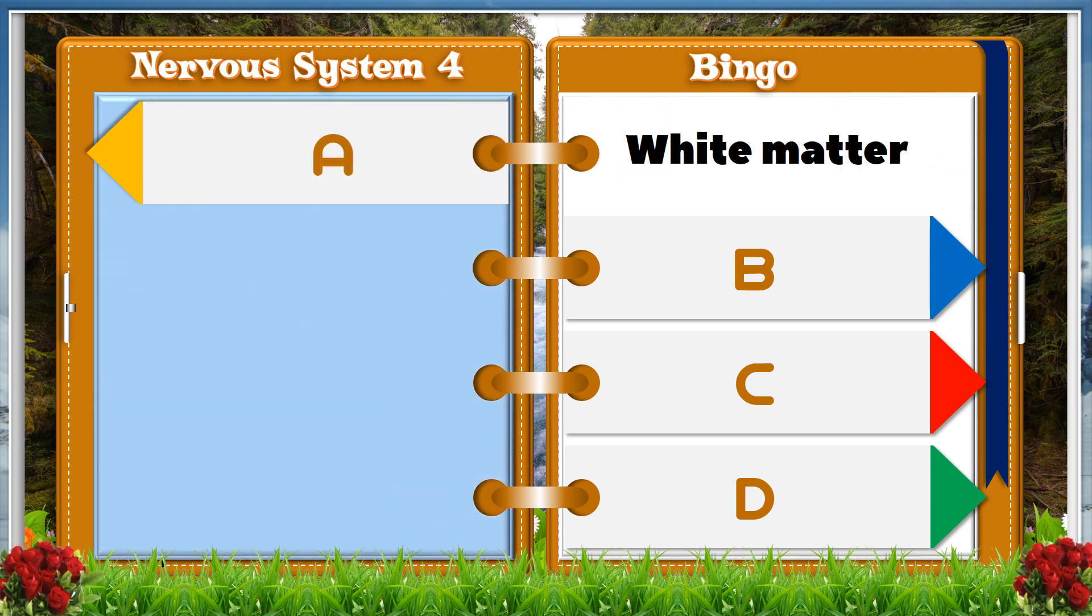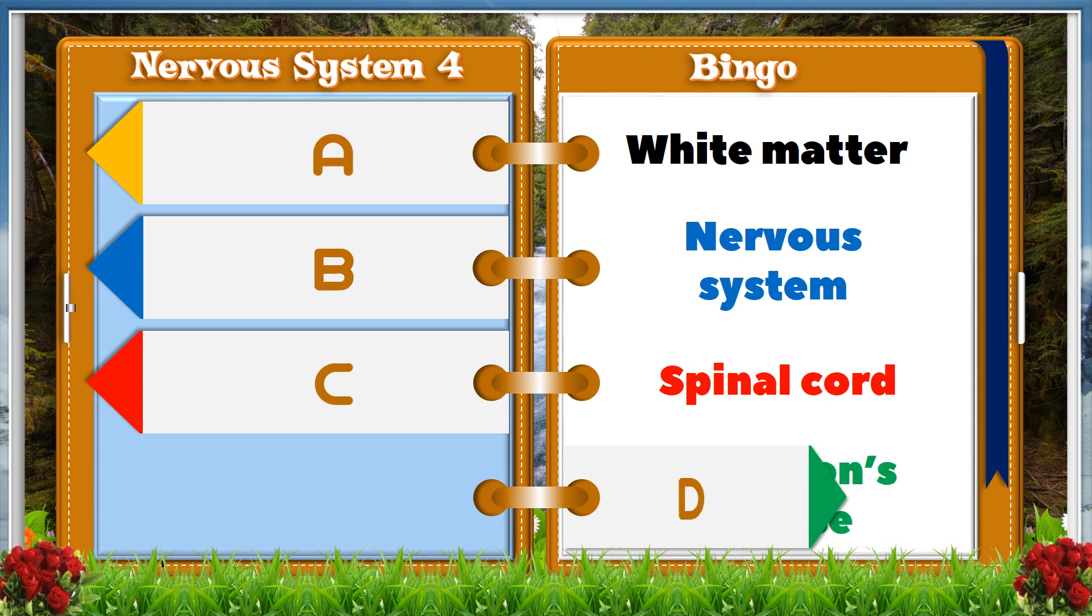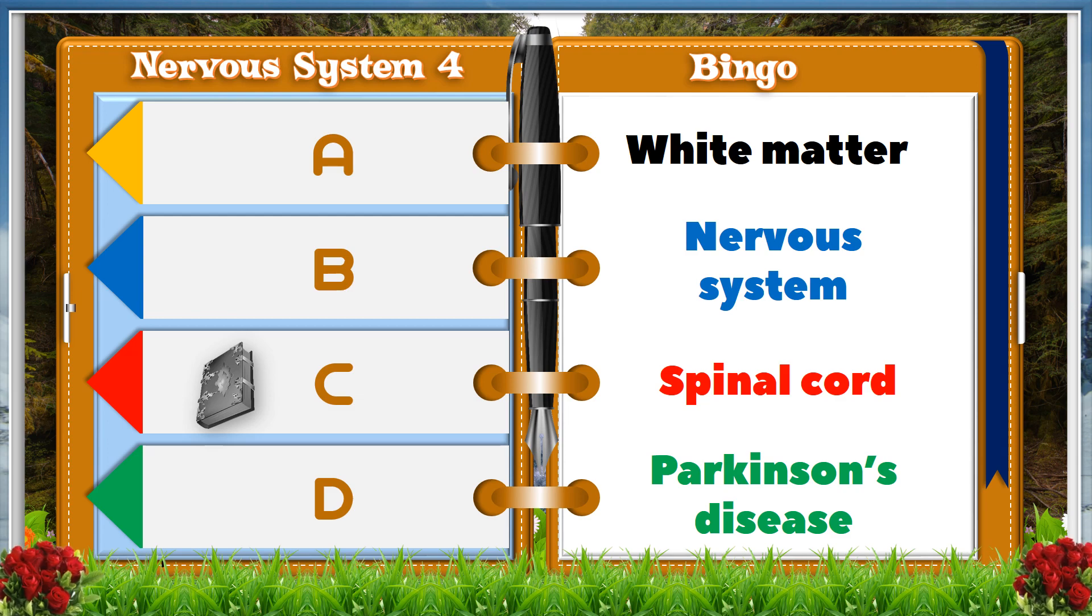A. White matter. B. Nervous system. C. Spinal cord. D. Parkinson's disease. And the answer is C. Spinal cord.